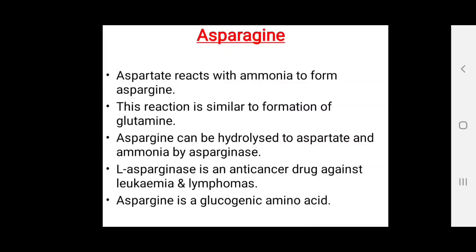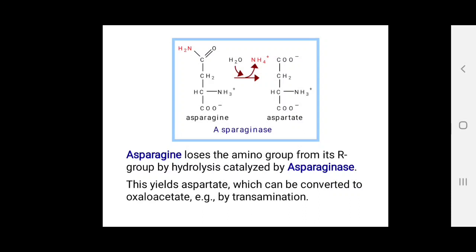Aspartic acid reacts with ammonia to form asparagine, a reaction similar to the formation of glutamine. Asparagine can be hydrolyzed to aspartic acid and ammonia by asparaginase. L-asparaginase is an anti-cancer drug used against leukemia and lymphomas. Aspartic acid, a glucogenic amino acid, loses its amino group by hydrolysis catalyzed by asparaginase, yielding aspartic acid which can be converted to oxaloacetate by transamination.